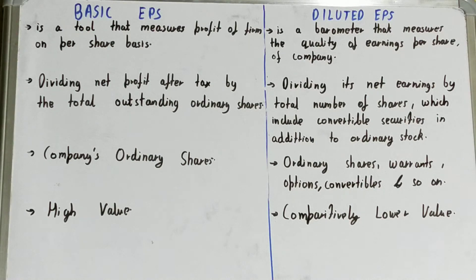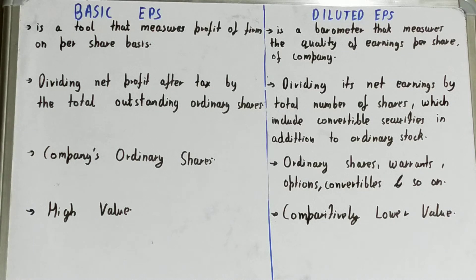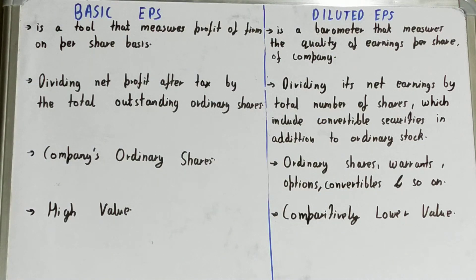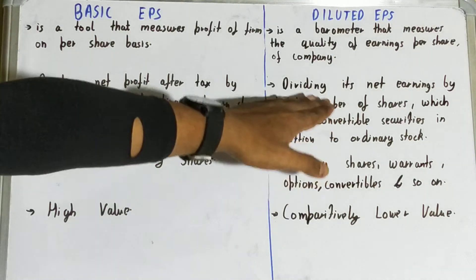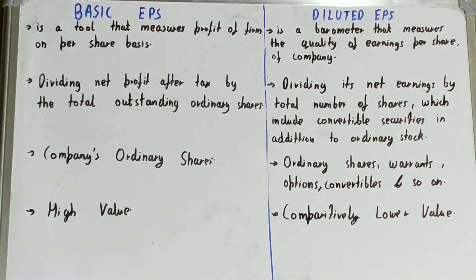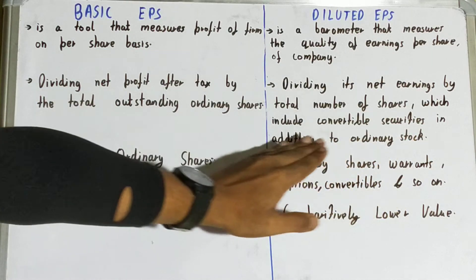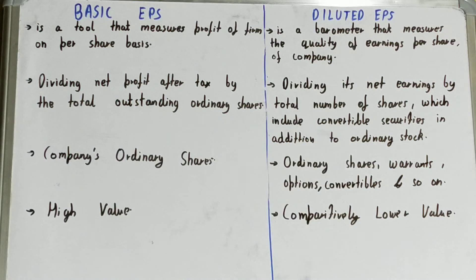For the calculation of basic EPS, it is done by dividing the net profit after tax by the total outstanding ordinary shares. But for diluted EPS, it is obtained by dividing net earnings by the total number of shares, which includes convertible securities in addition to ordinary stocks.